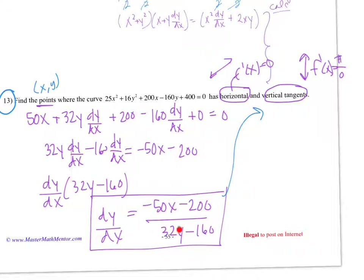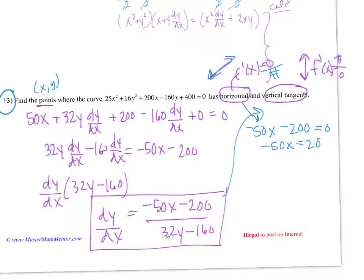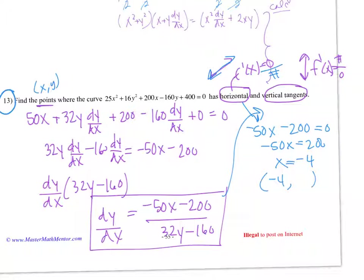In this rational expression, vertical tangents occur where the denominator equals 0, because if the slope is 0 over a number, that's a slope of 0. For horizontal tangents, I'm going to set negative 50x minus 200 equal to 0. Negative 50x equals 200, so x equals negative 4. When x is negative 4, I'll plug that in and solve for y — I think you're going to have more than one answer, because there's likely a quadratic. You can solve for the y values and see the points where the curve has a horizontal tangent.